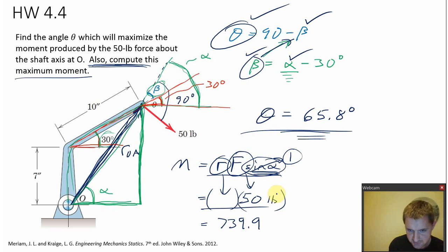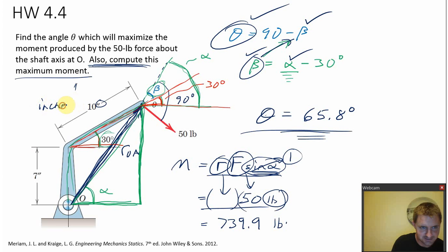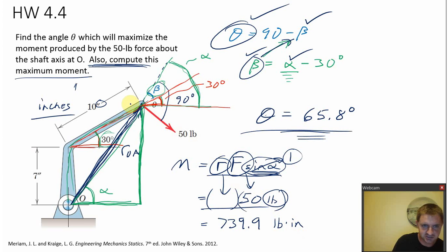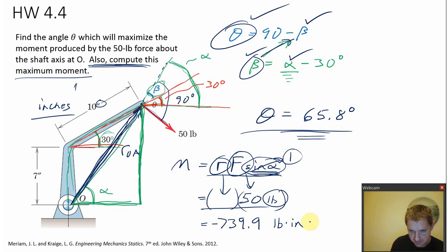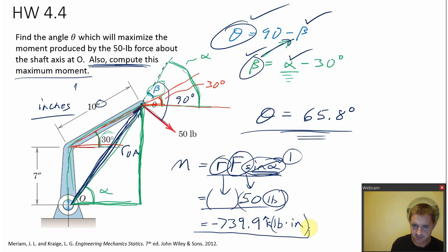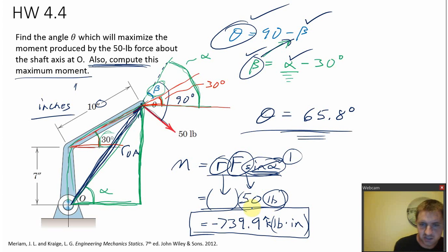The units: pounds for the force, inches for the distance — so pound-inches. The direction: this 50-pound force tends to rotate clockwise about O, so clockwise is negative k-hat. The maximum moment is 739.9 pound-inches in the negative k-hat direction.